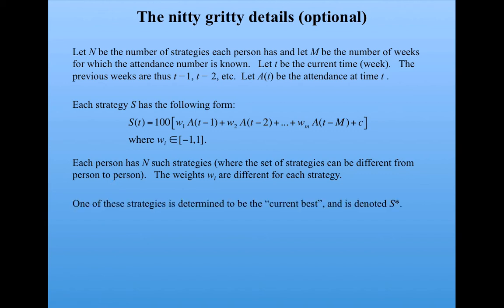Now one of these strategies is determined to be the current best one. We'll denote that by S-star. And the decision that each person makes is as follows. If S-star of T, that is the best strategy that we've determined—I haven't told you how that's been determined, but I'll tell you in a minute—if S-star of T is greater than the overcrowding threshold, which is some value like 60, then don't go, otherwise go. This S-star of T is different for each person, but everybody uses this rule with their own S-star of T to decide whether or not to go.